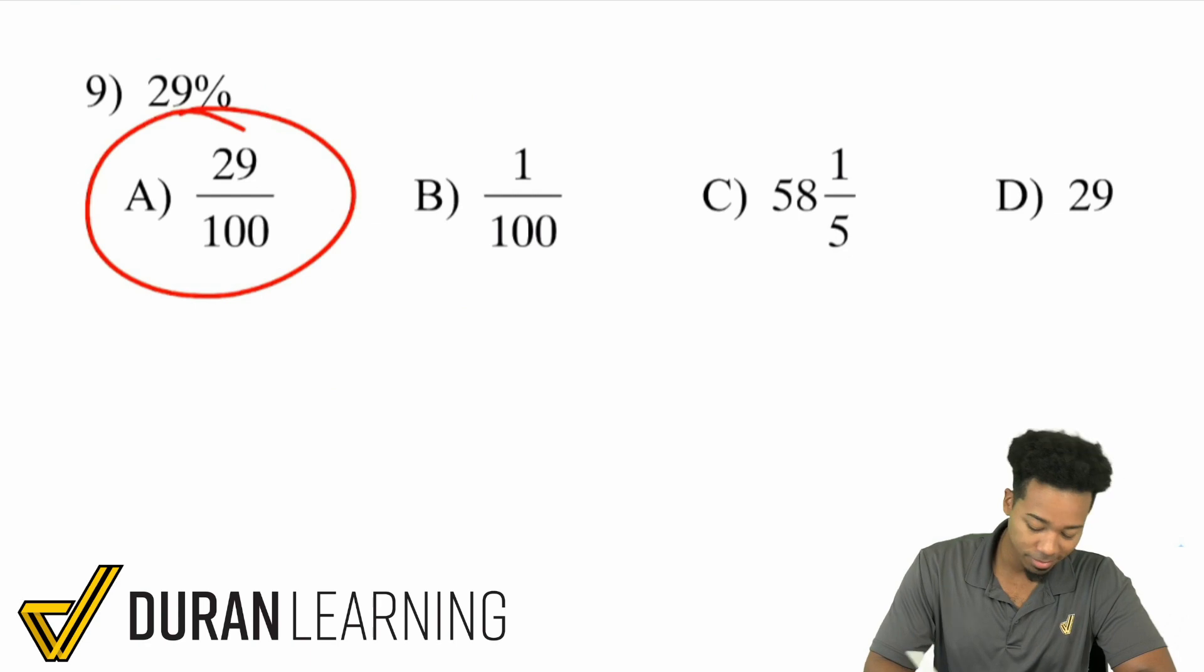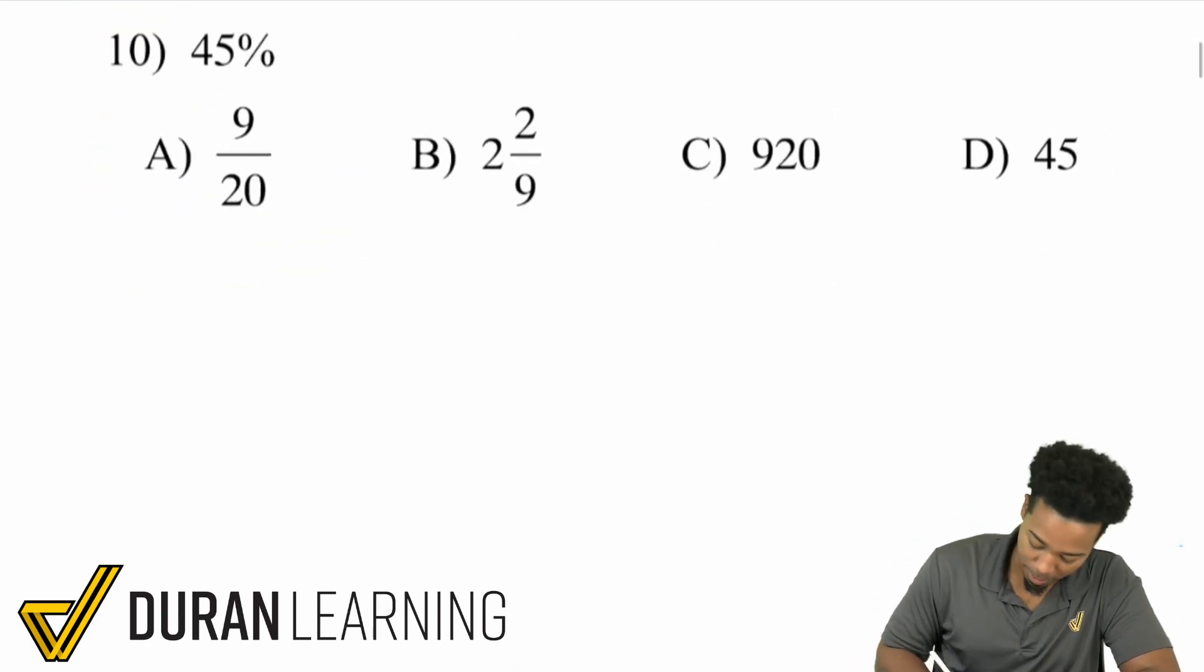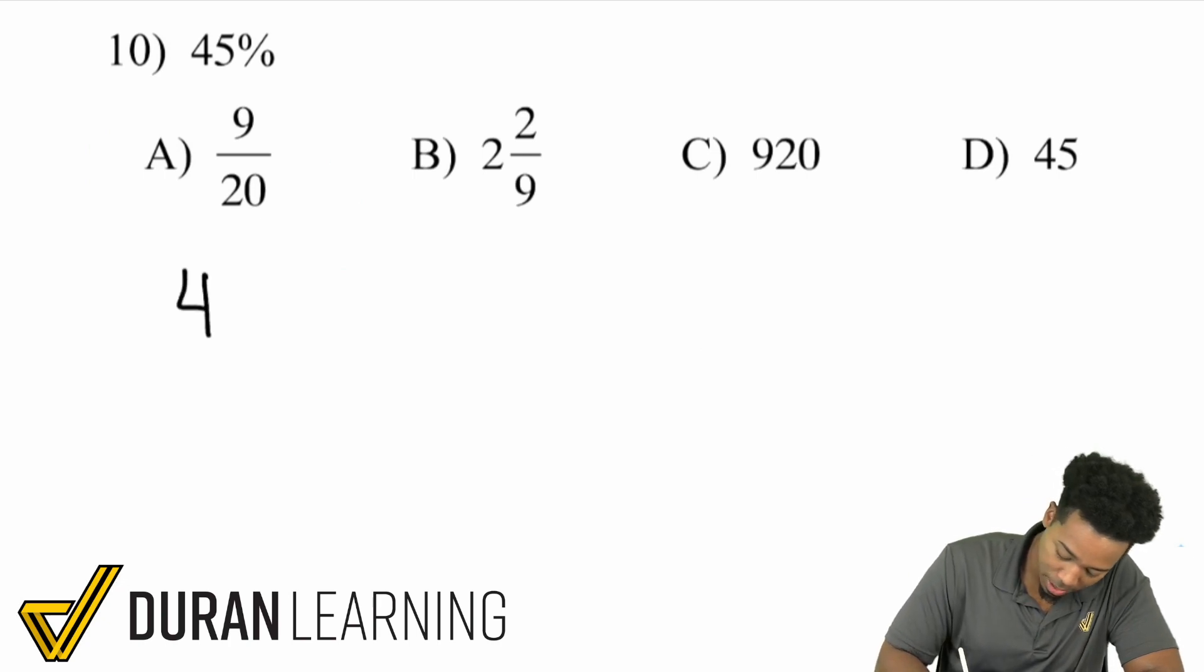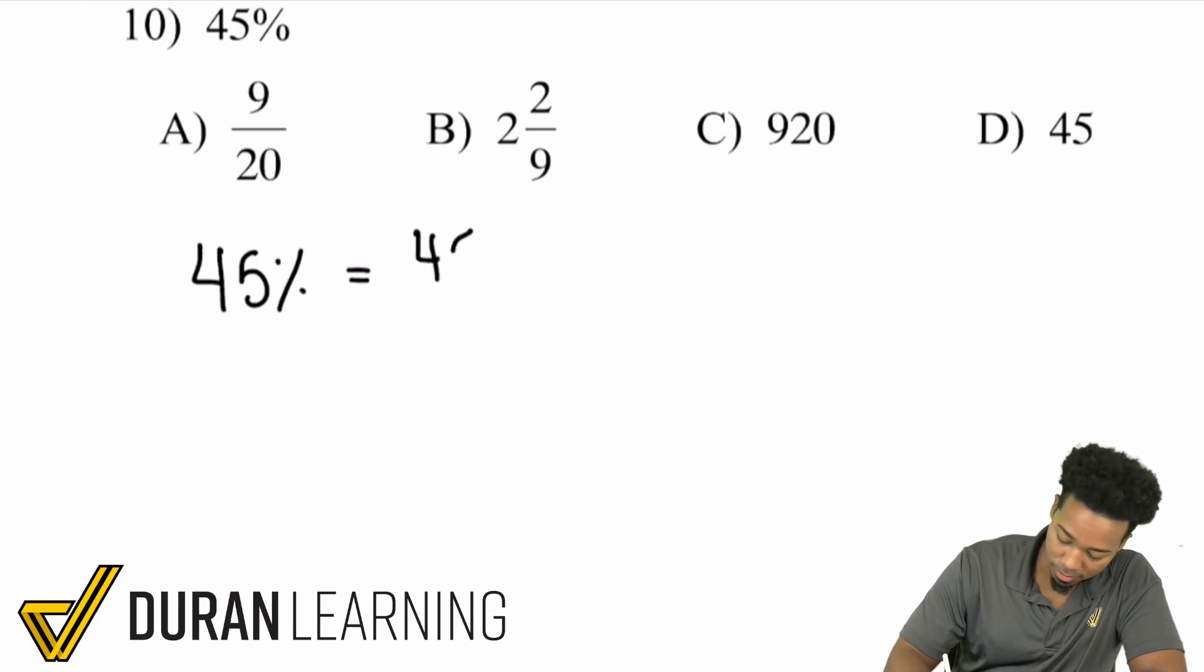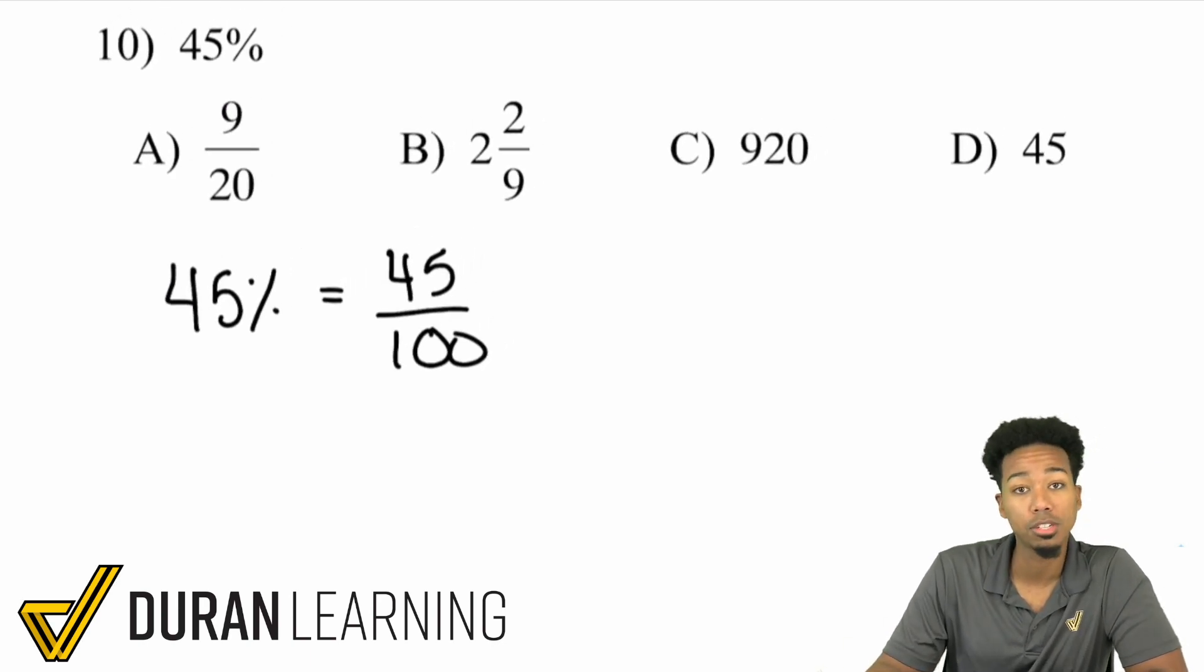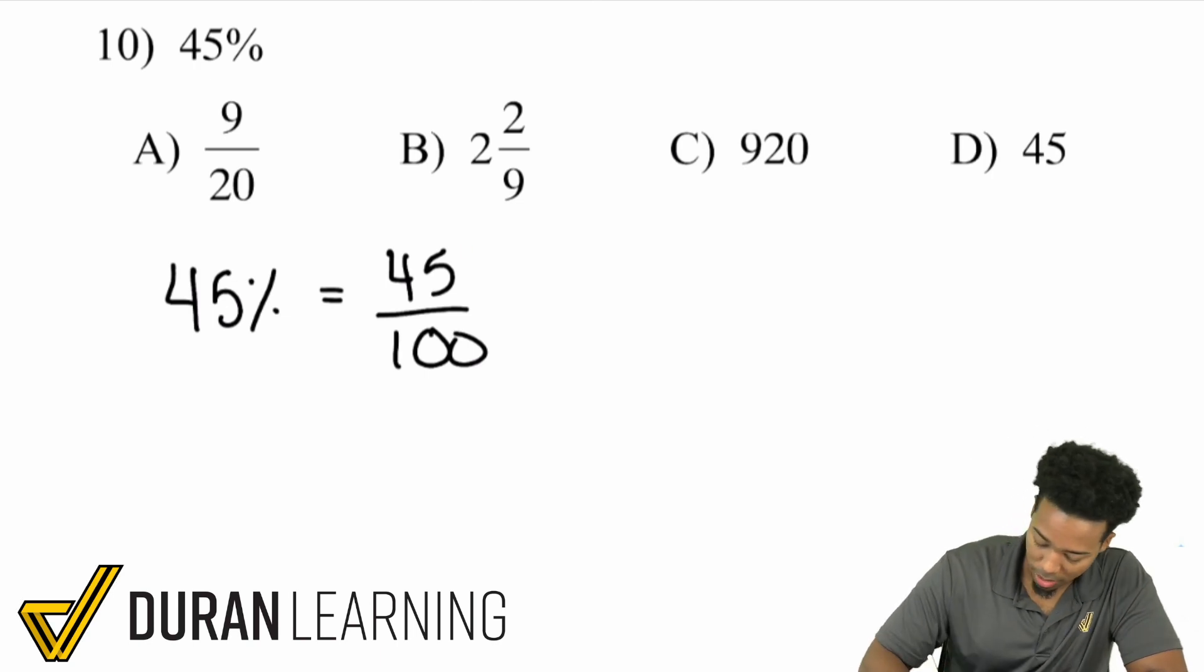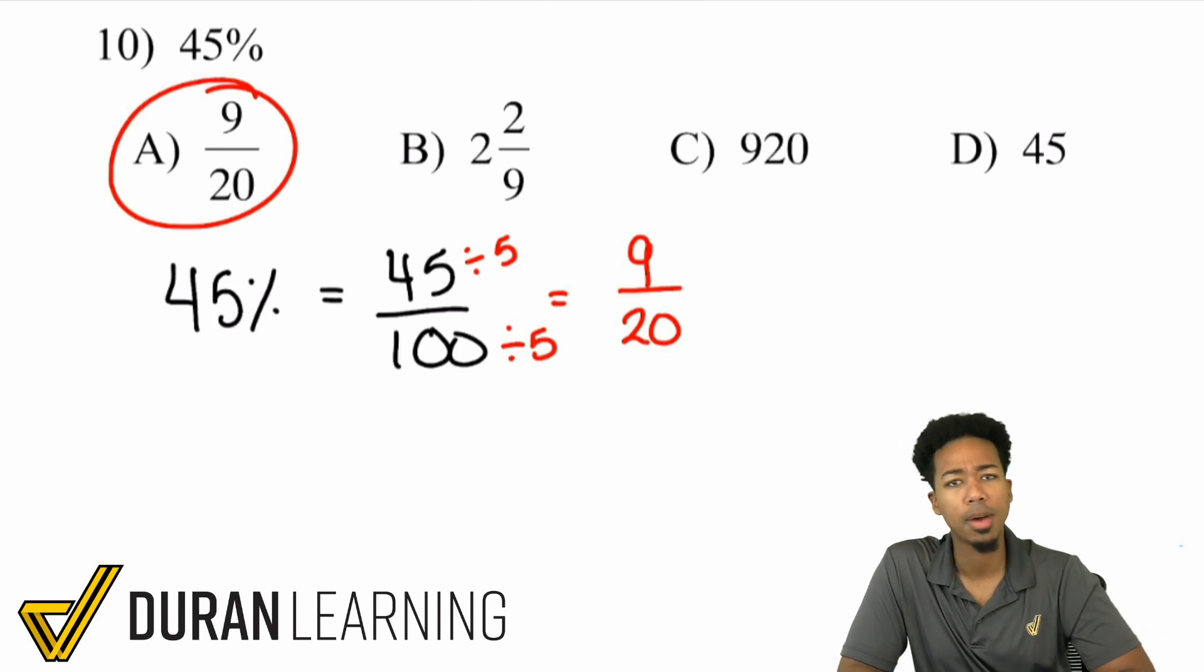29%. 29 out of 100. Remember, percent out of 100. Lastly, over here, 45%. And then we're calling it a day. If we have 45%, well, guess what? That's going to end up being 45 out of 100. And then we ask ourselves, well, what are 45 and 100 both divisible by? They're both divisible by 5. And so that's what we'll have right there, my math party people. Divide them both by 5. And we see that we'll have 9 over 20. And that's our answer right there. Super casual, super straightforward, my math party people.